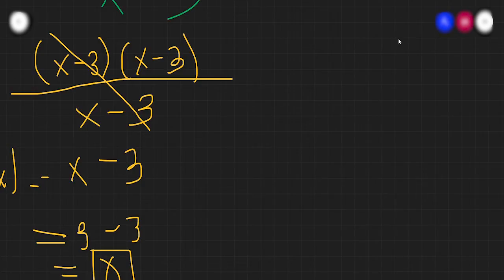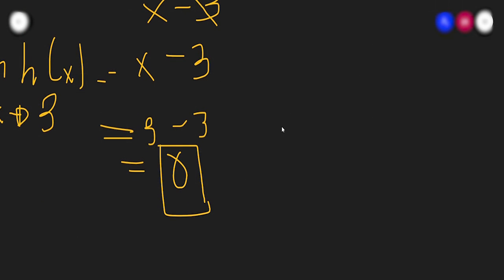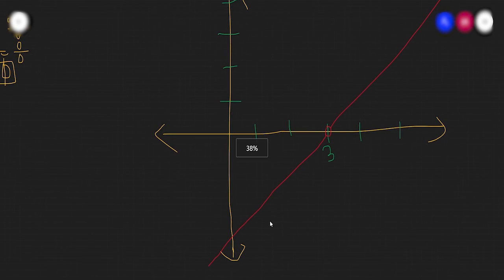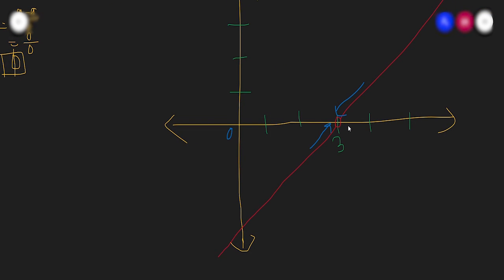We cancel one factor of x minus 3, leaving just x minus 3. Now we substitute x equals 3: we get 3 minus 3 equals 0. Notice how the answers differ — when we substituted directly, the answer was undefined. But when we find the limit, the answer is 0. If we graph this, h of x appears as a straight diagonal line, and at x equals 3 there is a hollow dot because it is undefined. However, the limit approaches 0 from both the left and right sides, so since both are the same, the limit exists and equals 0. Even if the function is undefined, we can still identify its limit.